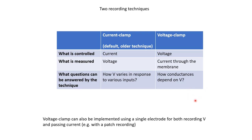In the previous slide we saw one recording electrode and one current-passing electrode for voltage clamp. However, both functions can be performed by the same electrode, so one can do patch recordings in voltage clamp mode with just a single electrode. This requires some sophisticated electronic circuit design, but commercial amplifiers that achieve this are now available.